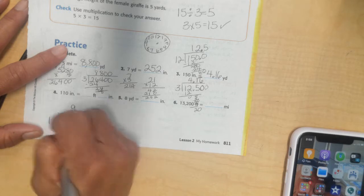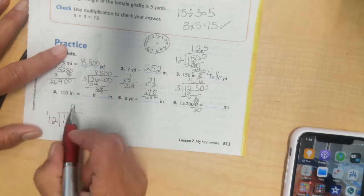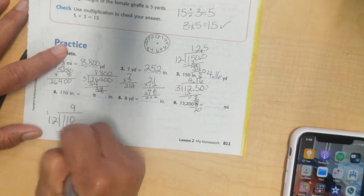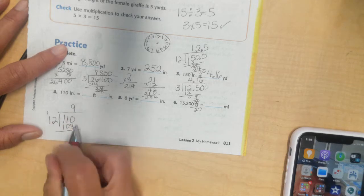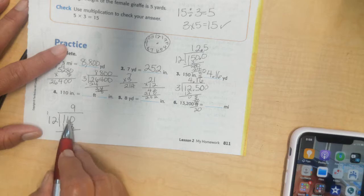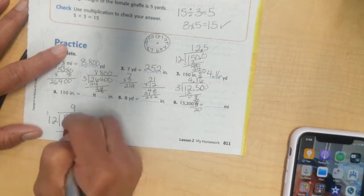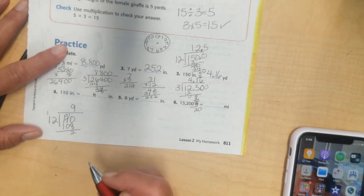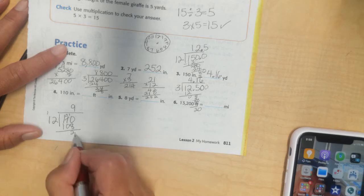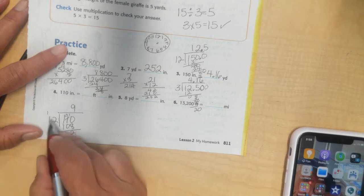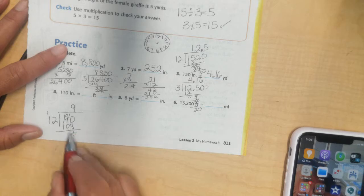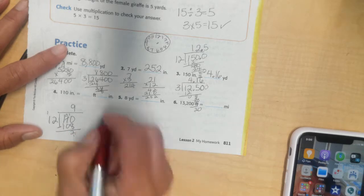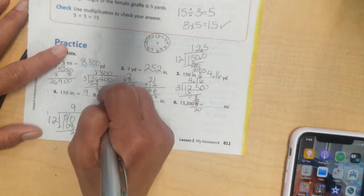9 times 2 is 18. Carry my 1. 9 times 1 is 9. Plus 1 is 10. I will subtract. I can't take away 8 from 0. I'll borrow. That turns that into a 0 and I have 10. I'll subtract. I get 2. And I'm going to leave this 2 alone. I have left over 2 inches. I divide up. I had 9 feet would be 108 inches. Plus an extra 2 inches. Gives me 108 inches plus 2 inches is 110 inches. So, I know I'm going to have 9 feet and 2 inches.